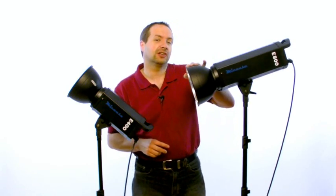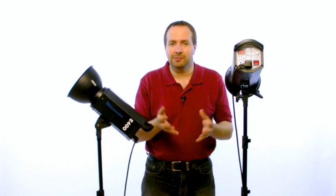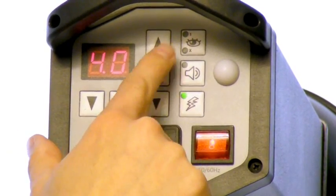Around the back you're going to find the control panel. Here you're going to find all digital controls as you might expect. So you can digitally control the flash output and it's very accurate. You can also digitally control the modeling lamp output as well or you can put it on proportional or turn it off.